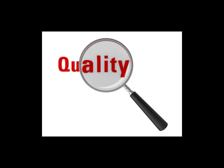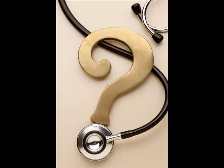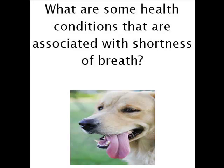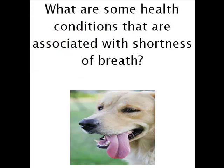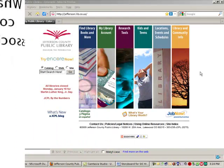Later on, we'll spend an entire video or two learning how to analyze the information we find. Let's start with the question we identified in our last video: what are some health conditions associated with shortness of breath? In the last video, we determined where to find quality information and identified the library as a source. A library website ties in with our first search tip: start your search in a website that generally has quality health information first before going to Google, Yahoo, or Bing.